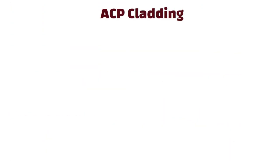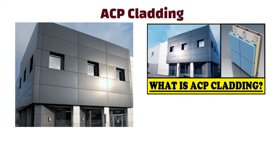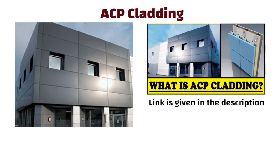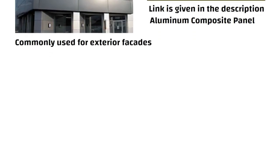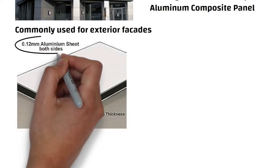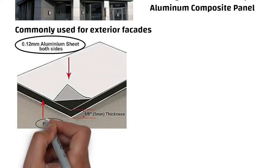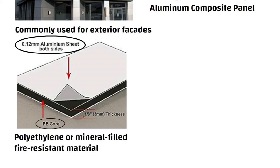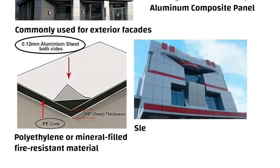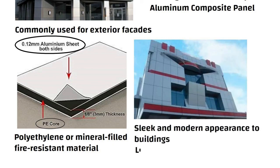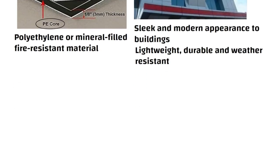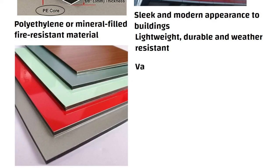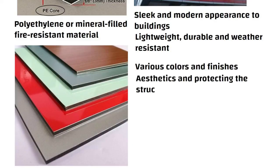ACP cladding. ACP stands for aluminum composite panel. I have already made a separate detailed video on this topic — the link is given in the description. ACP cladding is a building material commonly used for exterior facades. It consists of two thin aluminum sheets bonded to a core material, usually made of polyethylene or mineral-filled fire-resistant material. ACP cladding provides a sleek and modern appearance, and it is lightweight, durable and weather-resistant. Its versatility and ability to come in various colors and finishes make it a popular choice for enhancing aesthetics and protecting the structure of buildings.